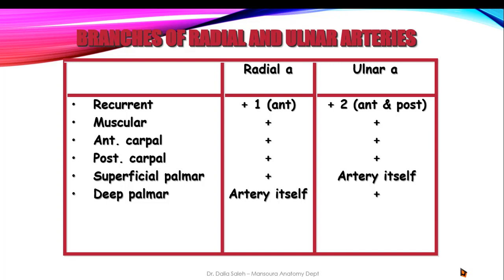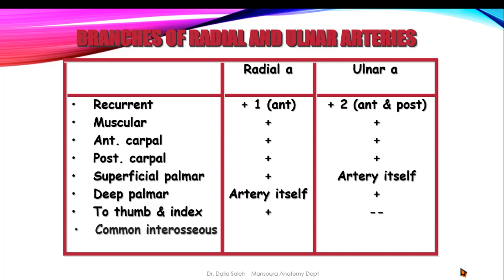The deep palmar arch is made mainly by the radial artery, while the superficial palmar arch is made mainly by the ulnar artery. The radial artery supplies the thumb and index finger because it lies on the lateral side, while the ulnar artery does not supply the thumb or the index. The ulnar artery gives the common interosseous artery. To summarize: both arteries share recurrent, muscular, and anterior and posterior carpal branches; then the ulnar forms the superficial palmar arch and gives the common interosseous branch, while the radial forms the deep palmar arch and supplies the thumb and index.